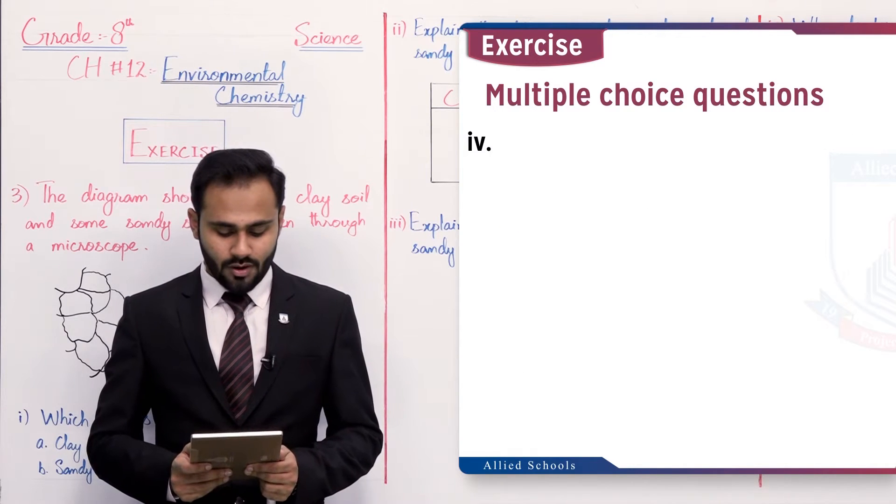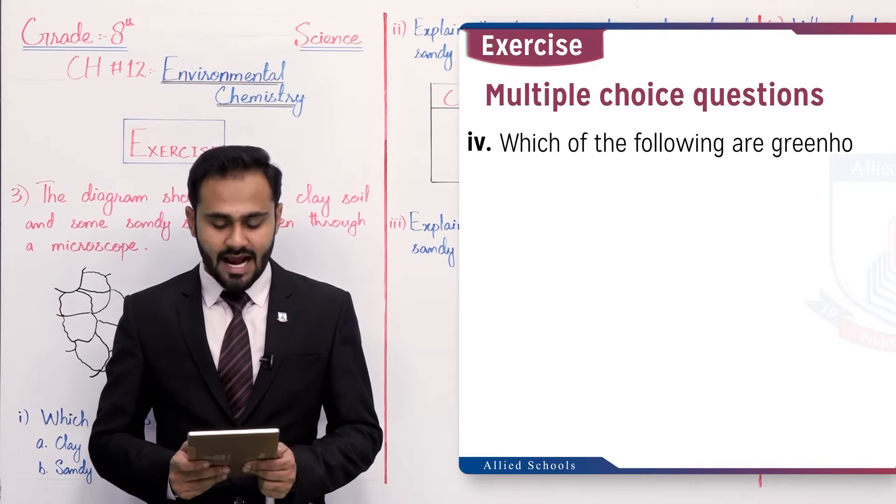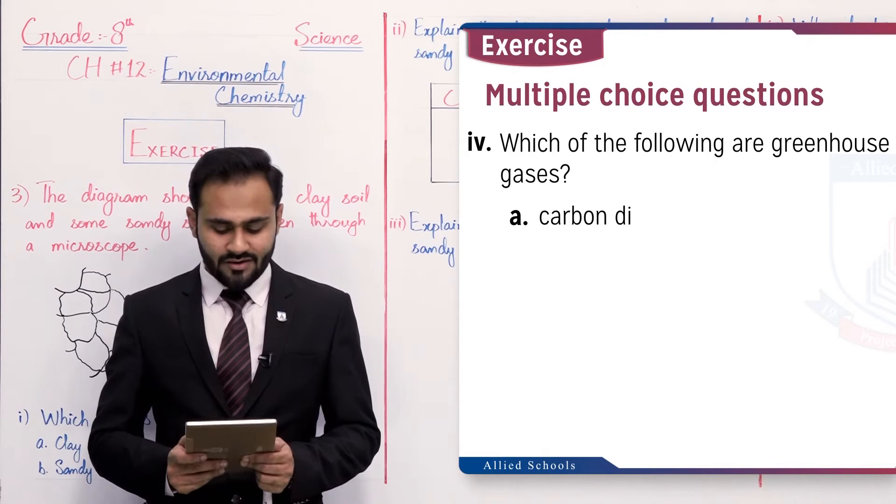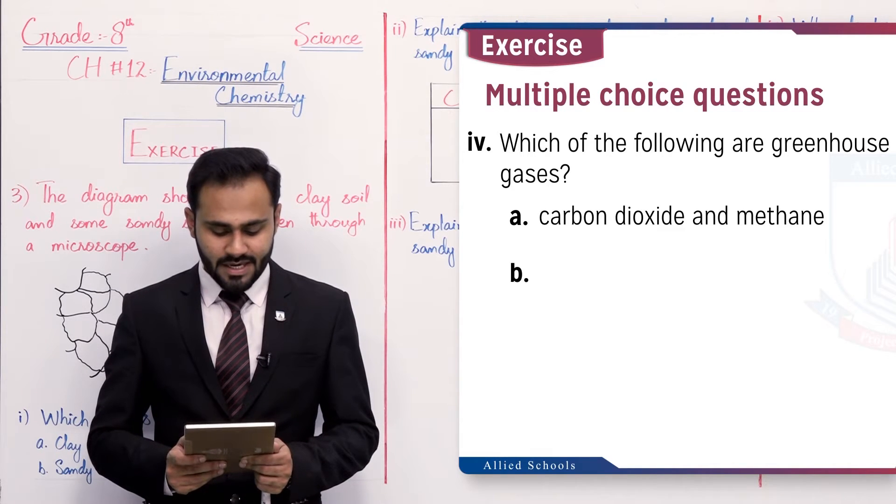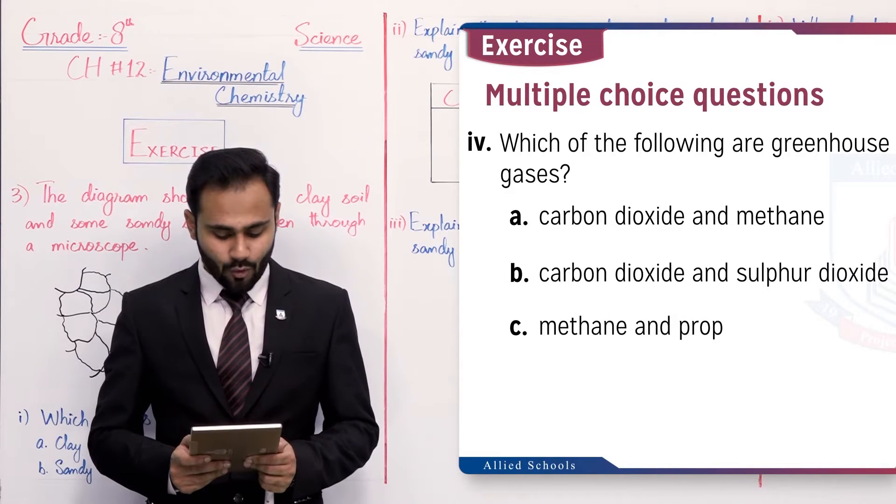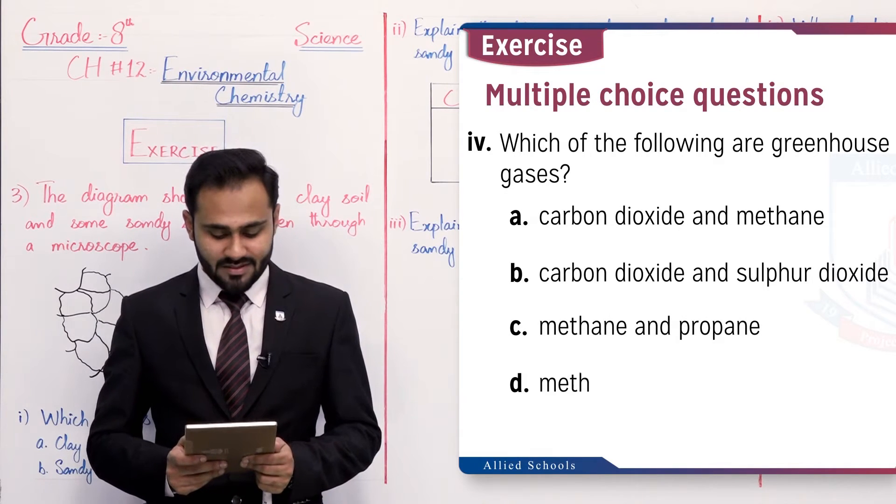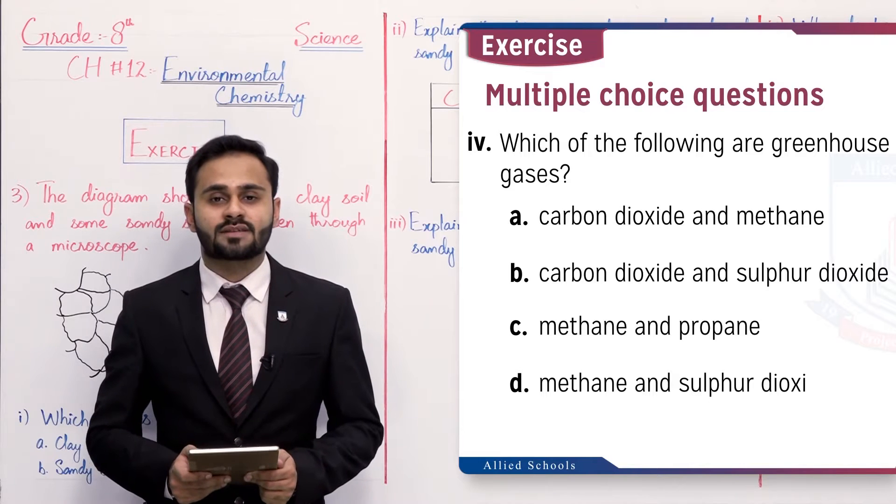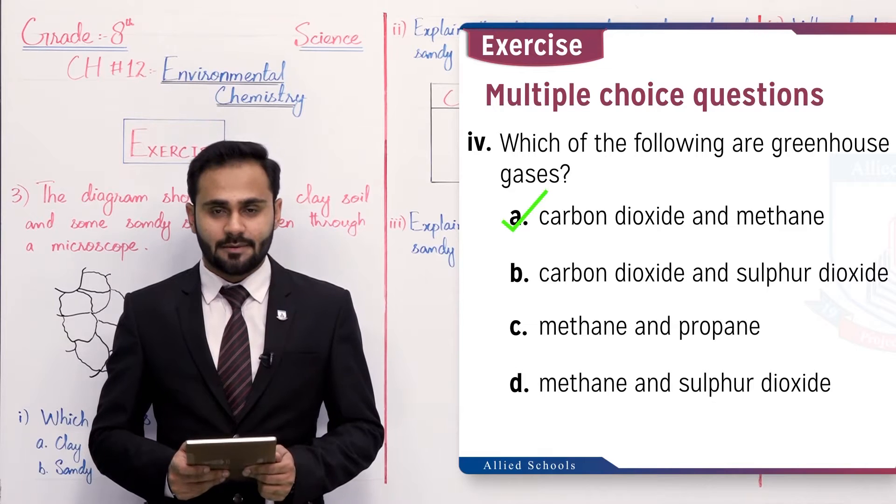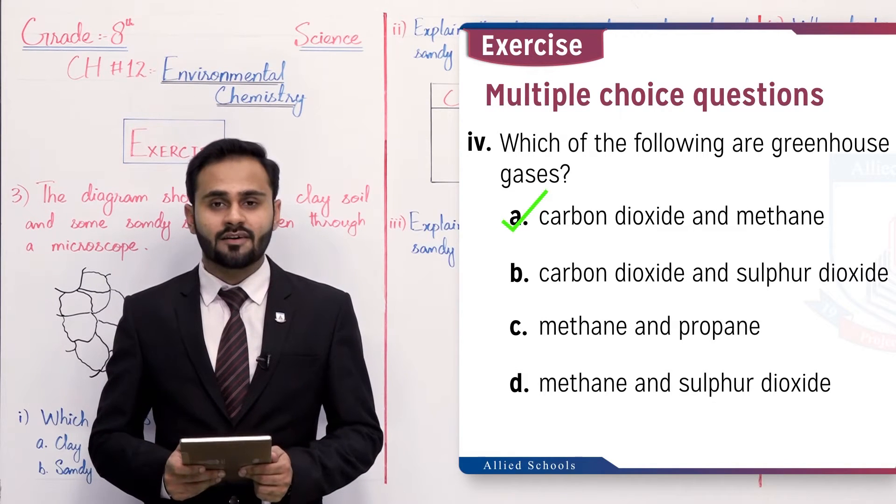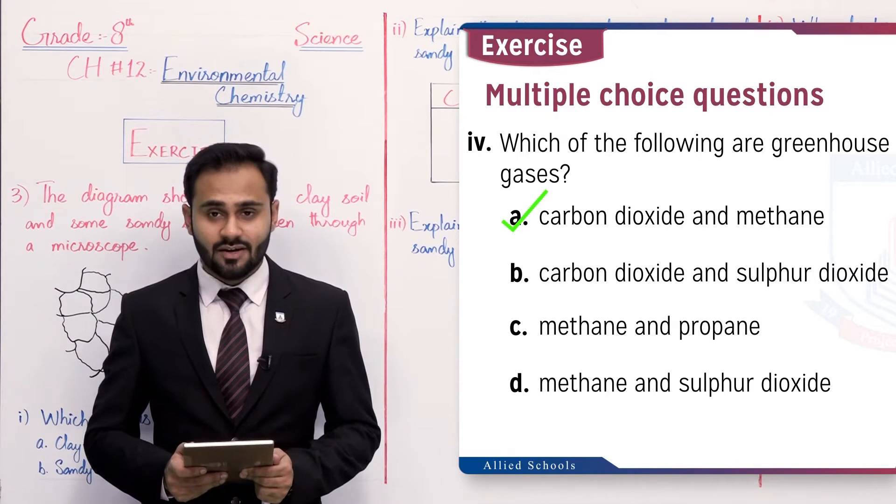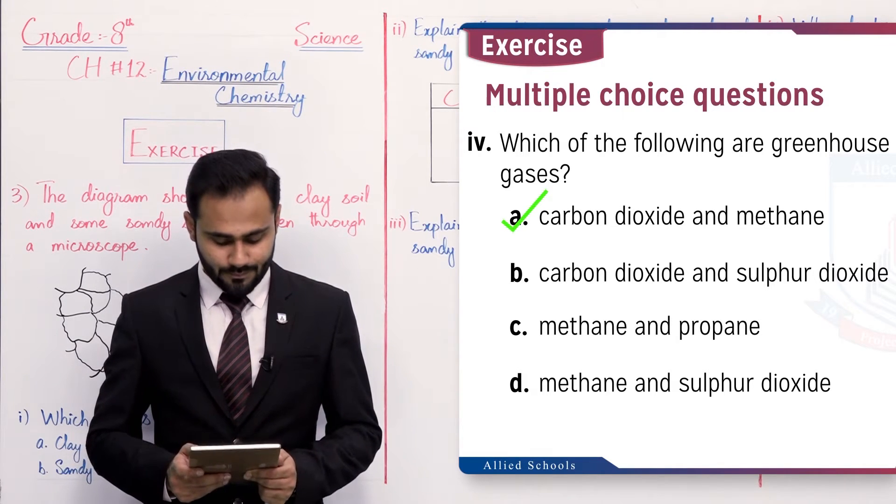MCQ number four: which of the following are greenhouse gases? Option A: carbon dioxide gas and methane, B: carbon dioxide and sulfur dioxide, C: methane and propane, and D: methane and sulfur dioxide. The option A is correct, that is carbon dioxide and methane. These two are the greenhouse gases jo ki earth ke temperature ko rise kar rahi hai, jis ki wajah se global warming cause ho rahi hai.